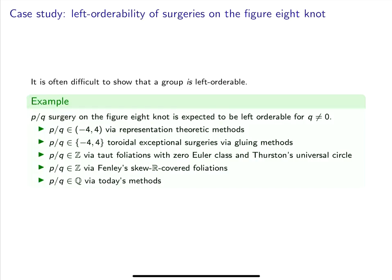Now, if a group is not left orderable, there is always a combinatorial proof of that fact, like the ones I just gave. On the other hand, it's often hard to show that a group is left orderable. The condition is not decidable in general, and usually to prove a group is left orderable, you just need to exhibit an action.